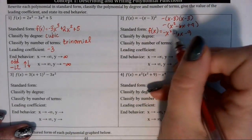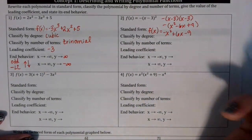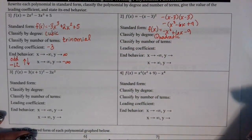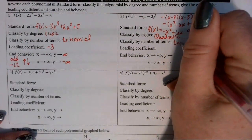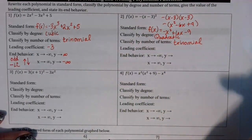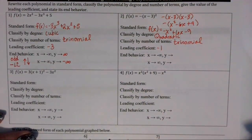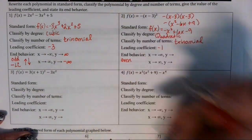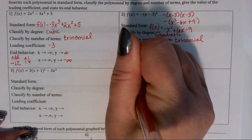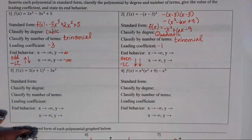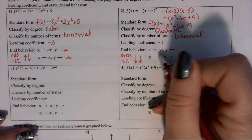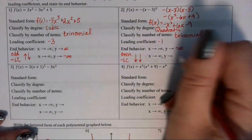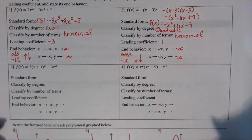Classifying by degree, the highest exponent term is squared, so that is quadratic. Classifying by number of terms, there are three terms, so that is a trinomial, and the leading coefficient is negative 1. For end behavior, since the degree is even and we have a negative leading coefficient, both ends of this graph are going to point down. As x approaches negative infinity, y approaches negative infinity, and as x approaches positive infinity, y is approaching negative infinity.